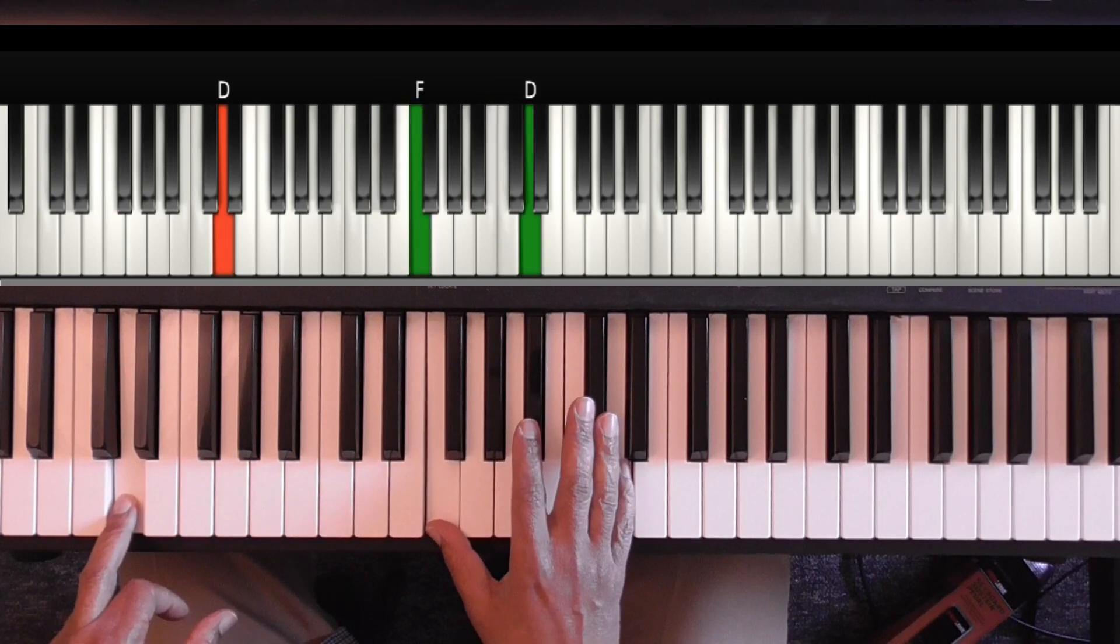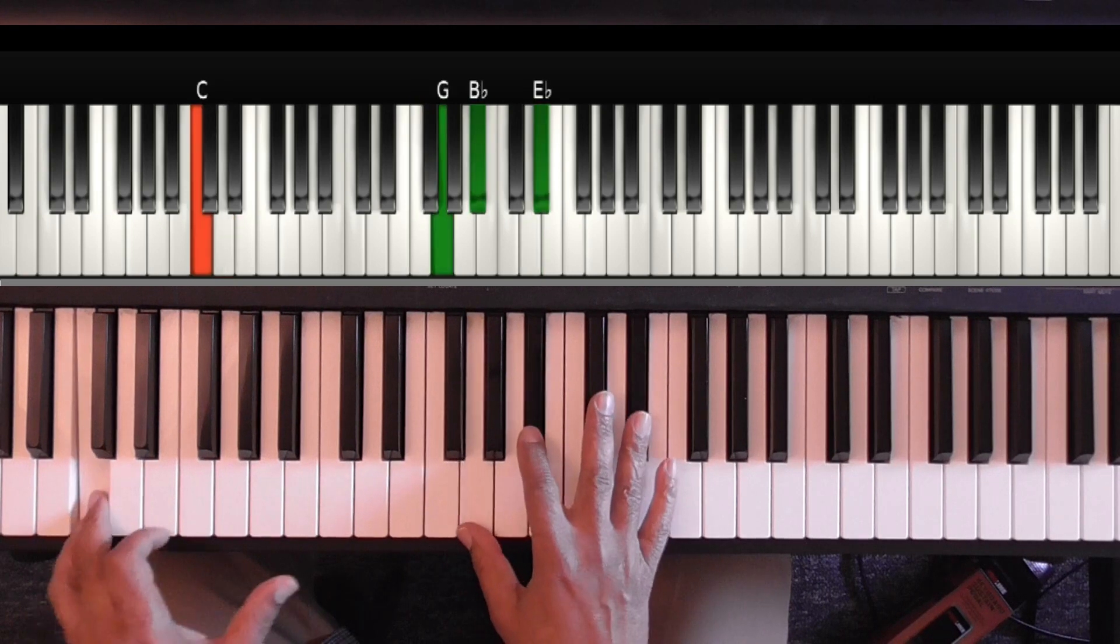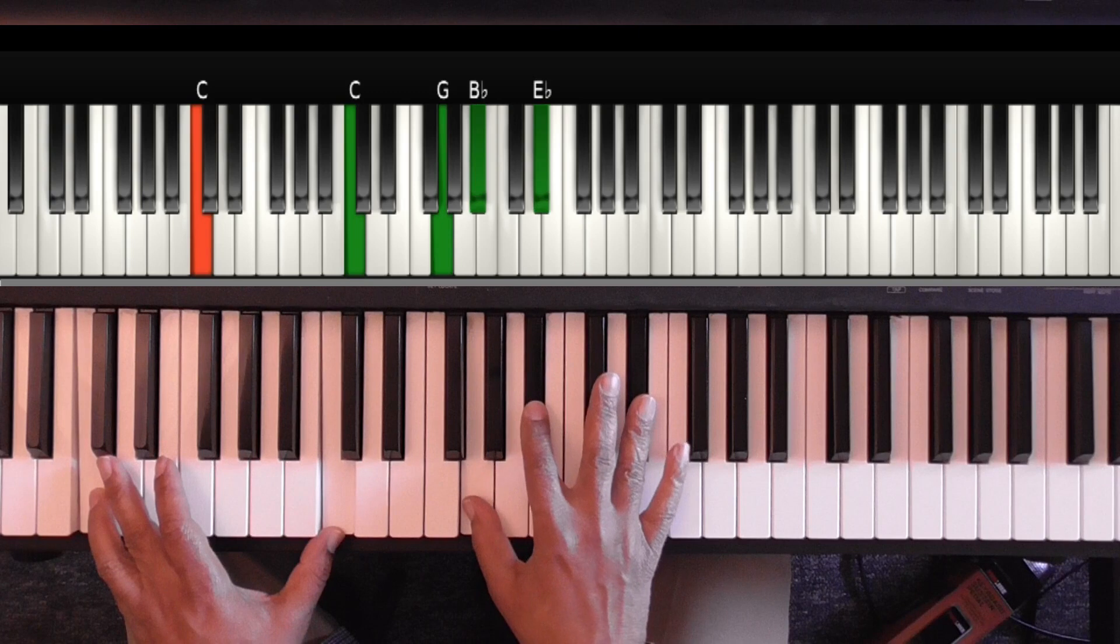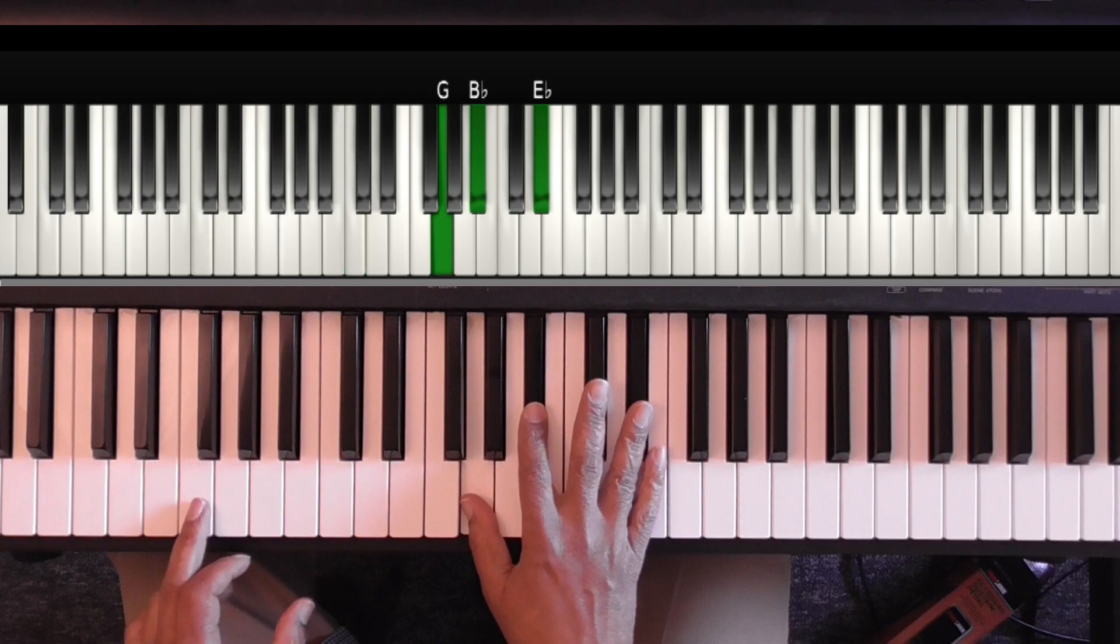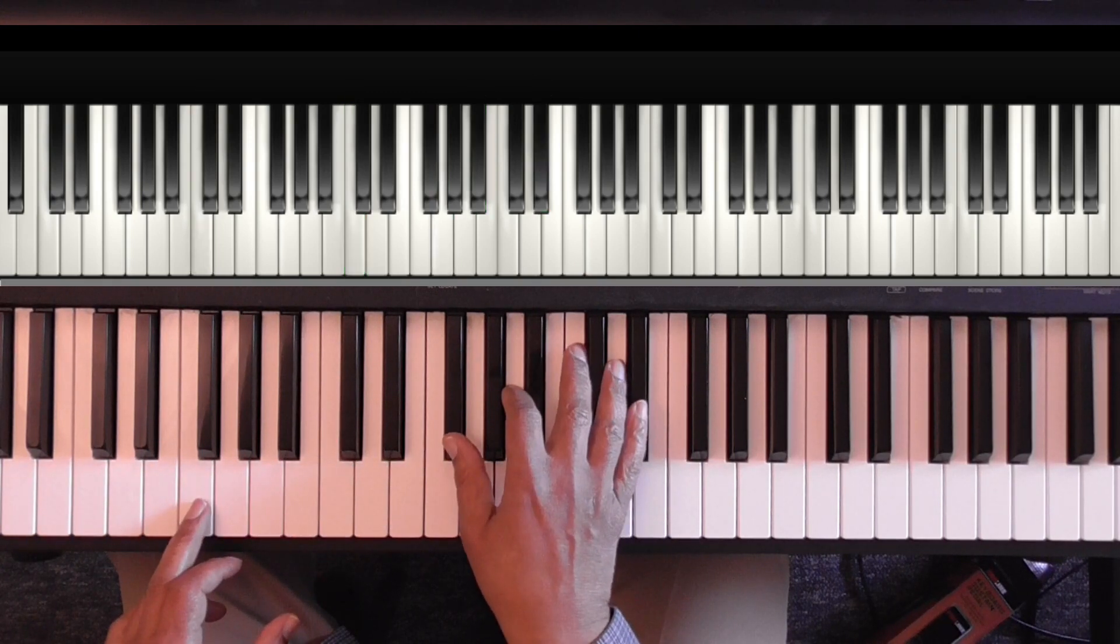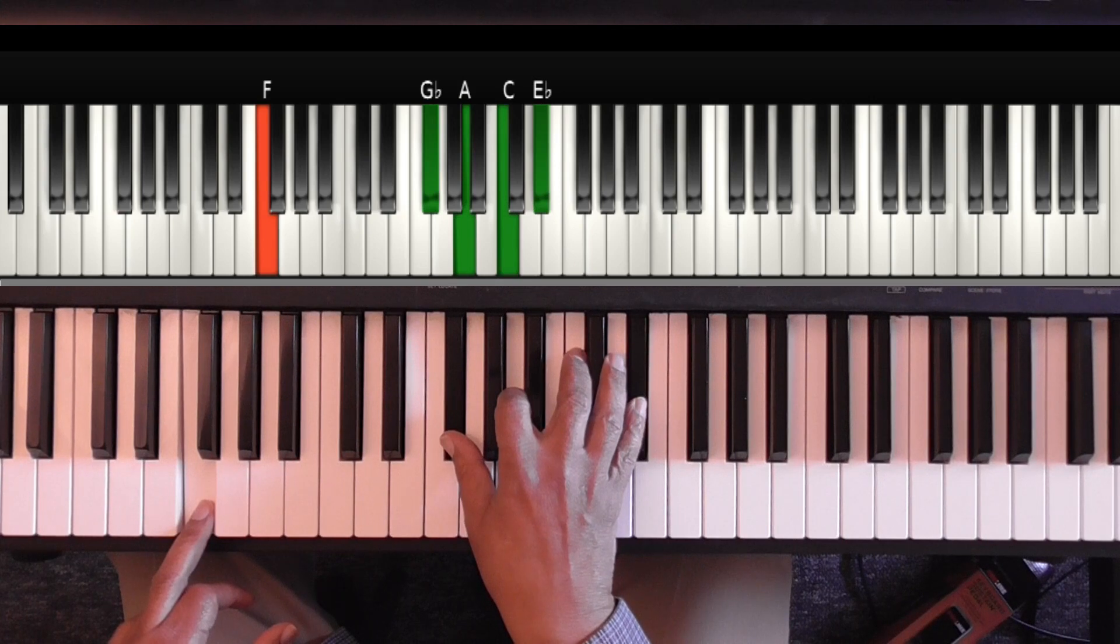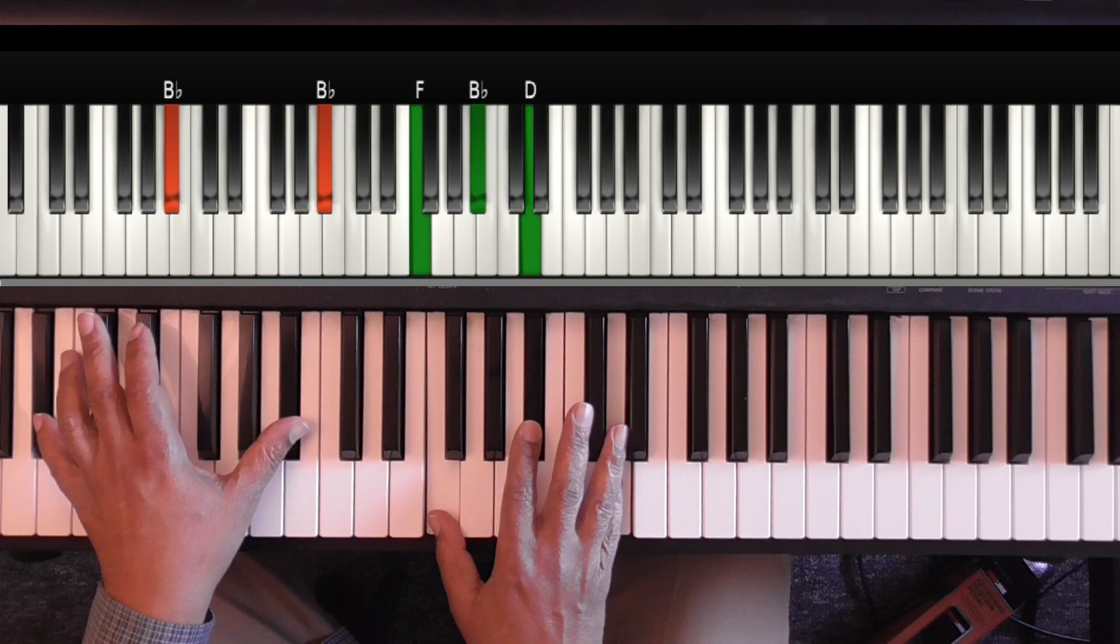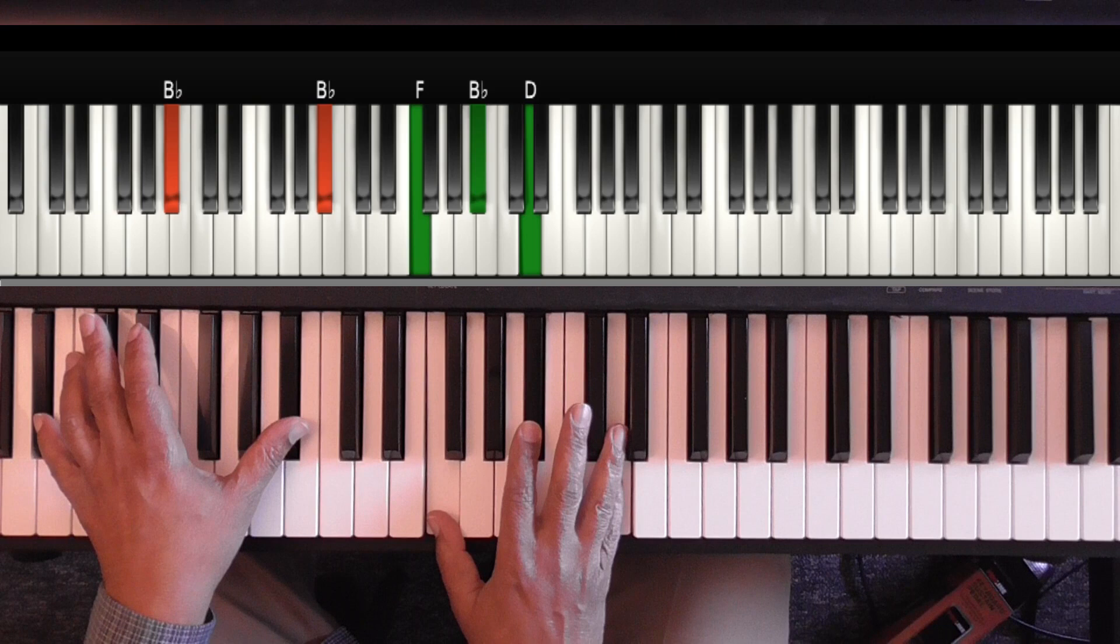Then the 2 chord again, which is C minor 7th. Just invert it. Then the F chord, which is your 5 chord, ends the sentence. That's an F with a flat 9. All right. That's the introduction. That's also the first line. Hallowed be thy name.